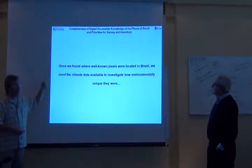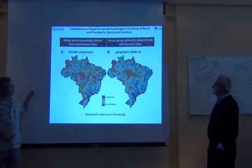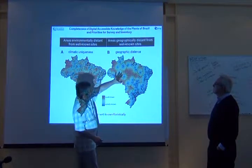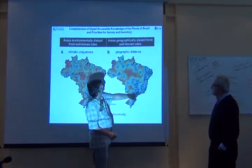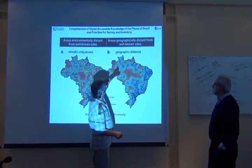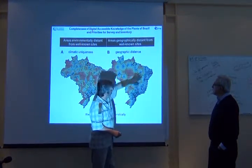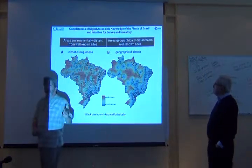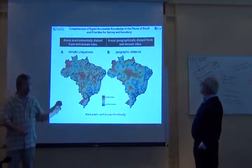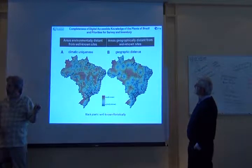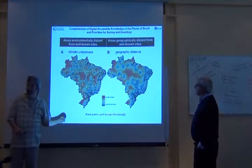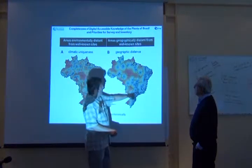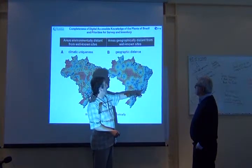So essentially, now what we're going to do is look at the gaps. These black pixels — you can see there are a few scattered here and there across the west, but then there are lots of them in the east. Those black pixels are the pixels that our analysis shows to be well characterized. Geographic distance to a well-characterized pixel is easy.